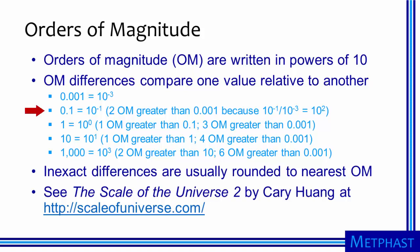0.1 is two orders of magnitude greater than 0.001 because 10 to the minus first power divided by 10 to the minus third power is 10 to the second power. 1 is equal to 10 to the zero power, so it is one order of magnitude greater than 0.1.